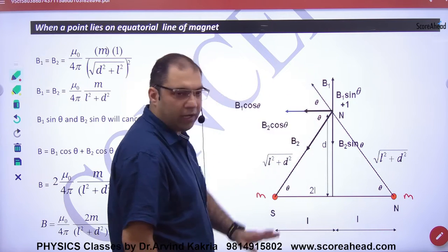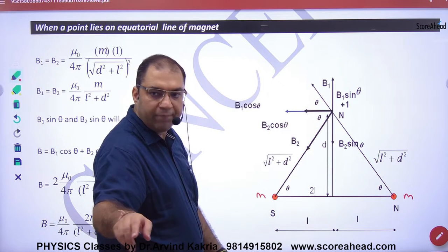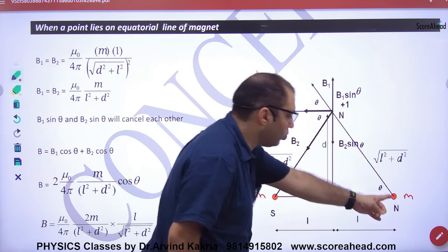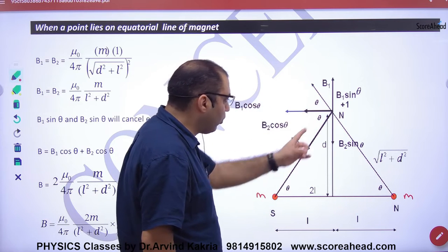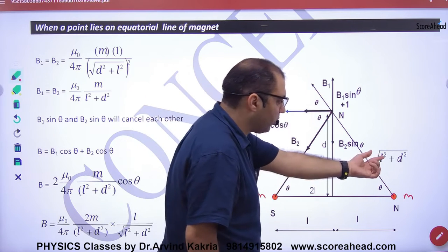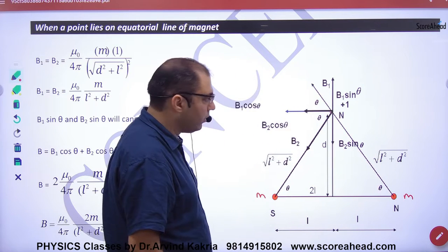You have to find the field at distance d. Where we have pole strength +1 and imaginary pole is north. If this distance is d and this is L, then the distance is under root of L-square plus d-square.